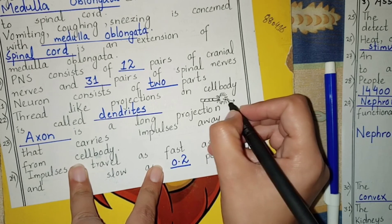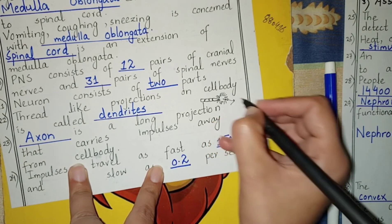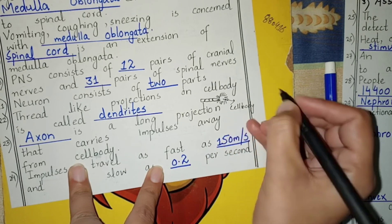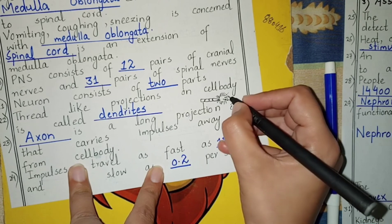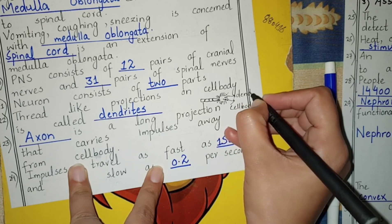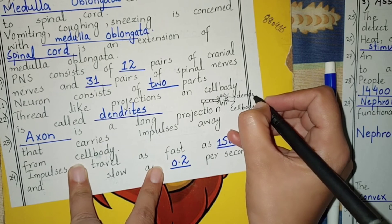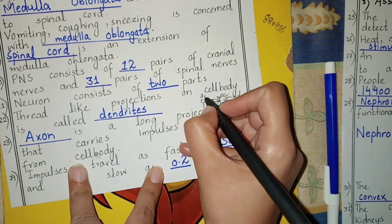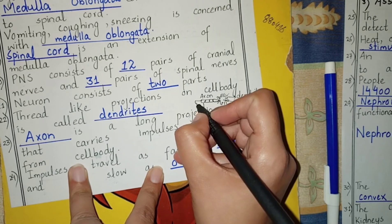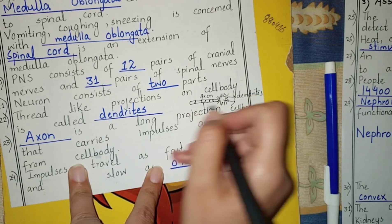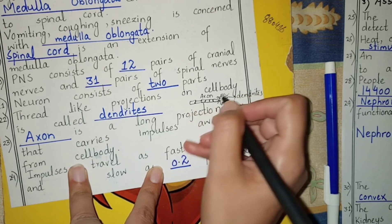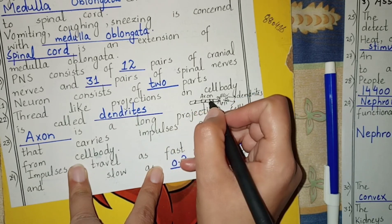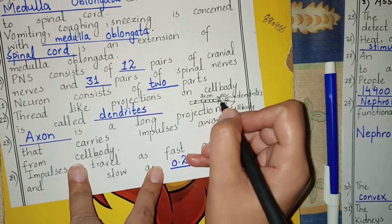This is the diagram of a neuron. This one is the cell body. Thread-like projections arising from the cell body are called dendrites. This one is the axon, which is a long projection that carries impulses away from the cell body. The neuron is divided into two parts: cell body and axon.